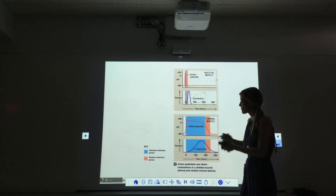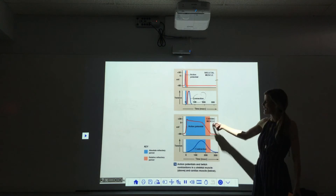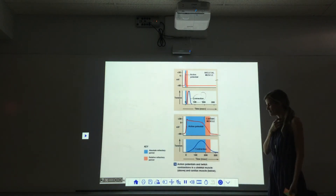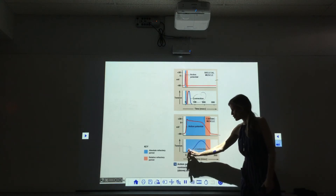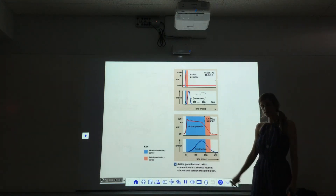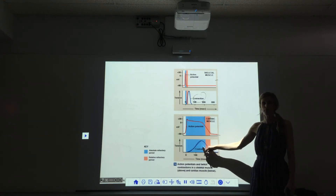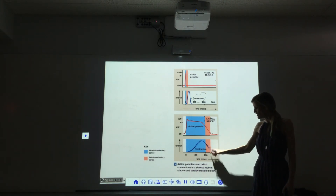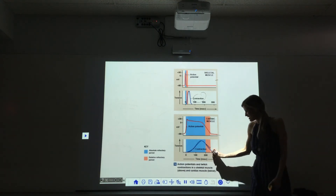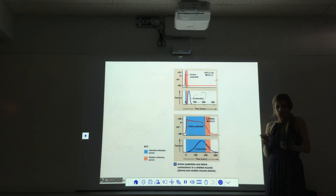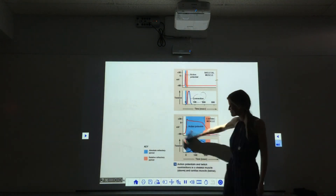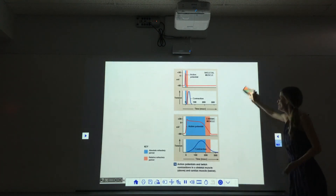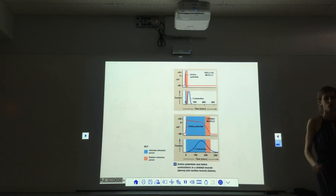Look at the cardiac muscle cell. We have this really long plateau, which stretches out the action potential, and really long refractory periods — especially the absolute refractory period. When contraction is at peak, we're in the absolute refractory period. We cannot stimulate that muscle. Over here in the relative refractory period, we've already started to relax quite a bit. Once we're past the refractory periods, we're completely relaxed. The point of that plateau and that long absolute refractory period is to ensure that the heart has time to relax considerably before we stimulate it again — we do not want summation and tetany in our cardiac muscle cells.